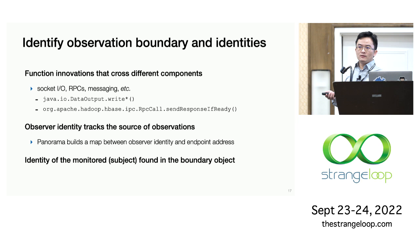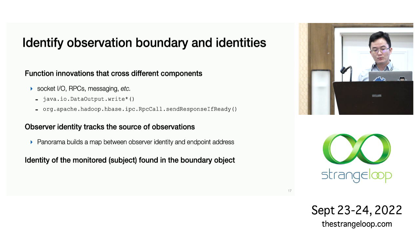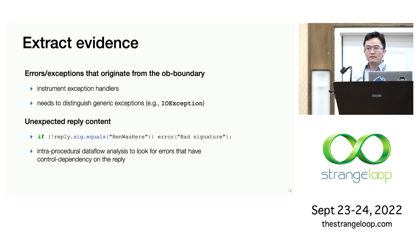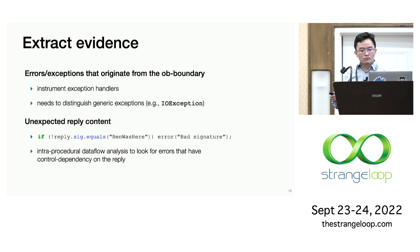For this first step — the observation boundary — we basically just need to find function invocations that span across components. These are usually done with standard methods like socket I/Os or RPCs. Most systems typically use a small set of such interfaces, so we can interpose on them without much effort. The observer's identity is obtained from a one-time registration when the system starts, but the identity of the monitor subject can be found from the boundary object we identify. Once we find this boundary, the analyzer further locates error handlers in the code that are influenced by the boundary and inserts hooks there to report evidence.